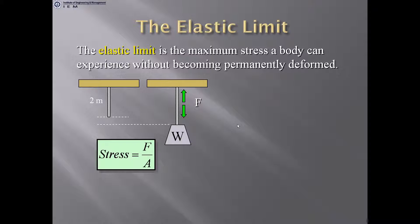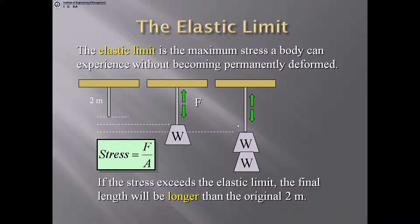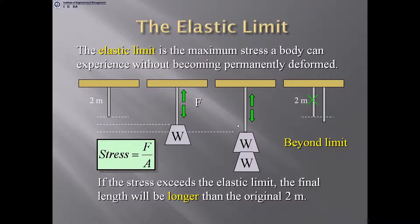The elastic limit is the maximum stress a body can experience without becoming permanently deformed. If more load is applied, more elongation occurs. If the stress exceeds the elastic limit, the final length will be longer than the original. The body is then in the plastic region — it has crossed its elastic limit and some permanent deformation has occurred.